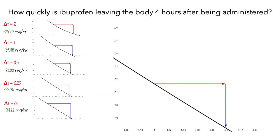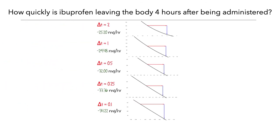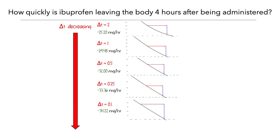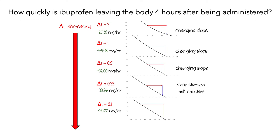Now we have five graphs that we can compare. From top to bottom, we can see how the amount of change in time was decreasing from 2 hours to 1 hour to a half to a quarter to a tenth of an hour. In our first graph with delta t of 2 hours, the graph is curved, so the rate at which ibuprofen is leaving the body is changing over the 2 hour interval. The same was true for delta t of 1 hour and a half hour. However, when we used a delta t of a quarter hour, the slope started to look constant. And with a delta t of a tenth of an hour, the slope looks nearly constant over the interval, so the ibuprofen is close to leaving the body at a constant rate.